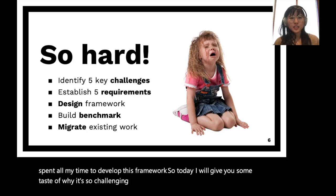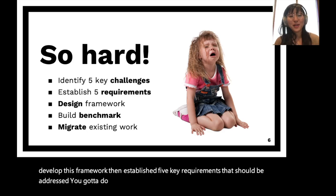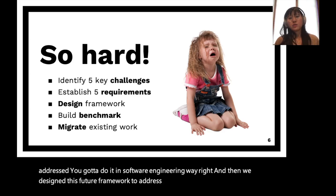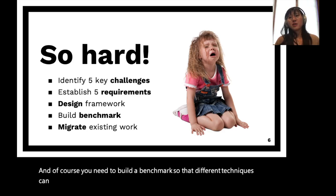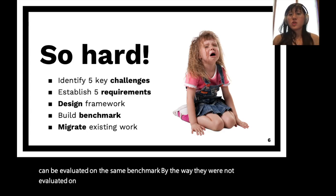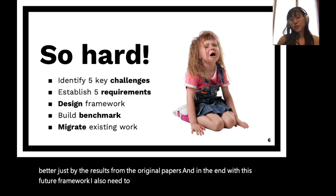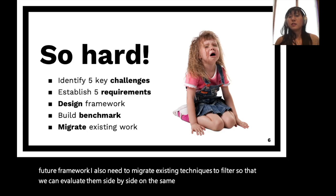We first identified five key challenges to develop this framework, then established five key requirements that should be addressed — you have to do it in a software engineering way. We then designed the Fruiter framework to address those requirements, built a benchmark so different techniques can be evaluated on the same benchmark — they were not evaluated on the same benchmark before, so you cannot determine which is better just from original papers. Finally, we migrated existing techniques to Fruiter to evaluate them side-by-side on the same benchmark.